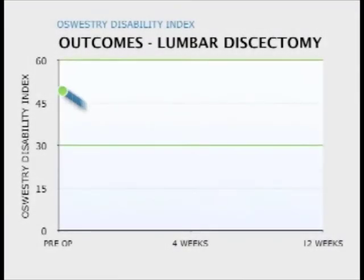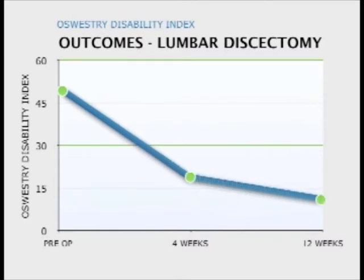This first graph is the Oswestry Disability Index — a 10-question questionnaire that asks patients about their function. The maximum score, which would be very poor function, almost bedridden, would be 100, and the best score would be 0. Most patients who aren't having any problems will score around 5. Of these 100 patients, the average preoperative score was 50. At their four-week appointment, the average score was down to 18. And then at the three-month appointment, the average score was 12.